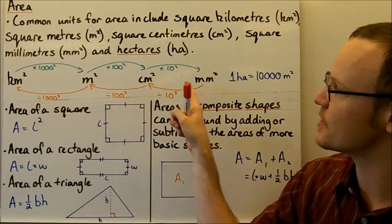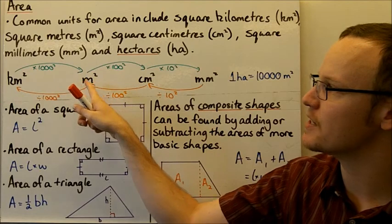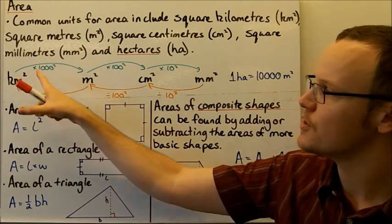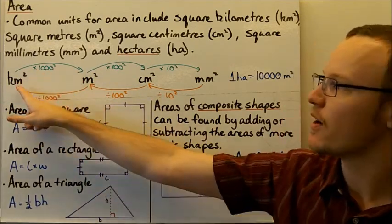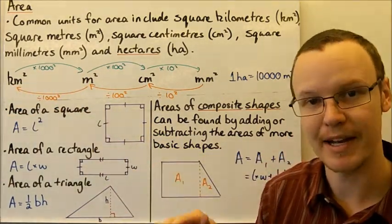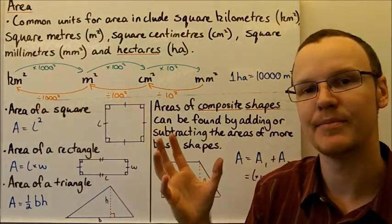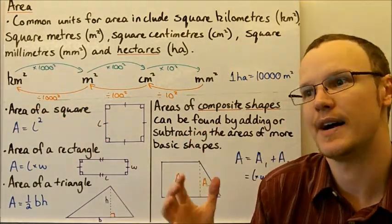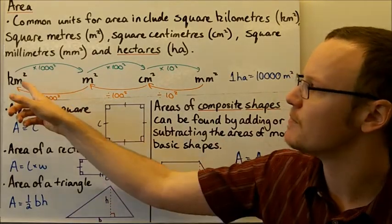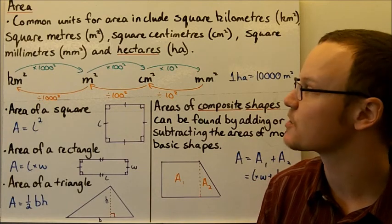Here are the conversions between the different units. Going from square kilometres to square metres, we multiply by a thousand squared. Notice that when going from just kilometres to metres we would multiply by a thousand, but now we're looking in two dimensions, so we need to square the conversion factor. Square kilometres to square metres: multiply by one thousand squared.